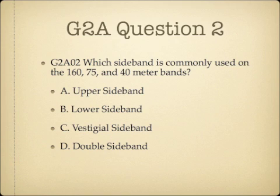Question 2. Which sideband is commonly used on the 160, 75, and 40 meter bands? A. Upper sideband. B. Lower sideband. C. Vestigial sideband. Or D. Double sideband.